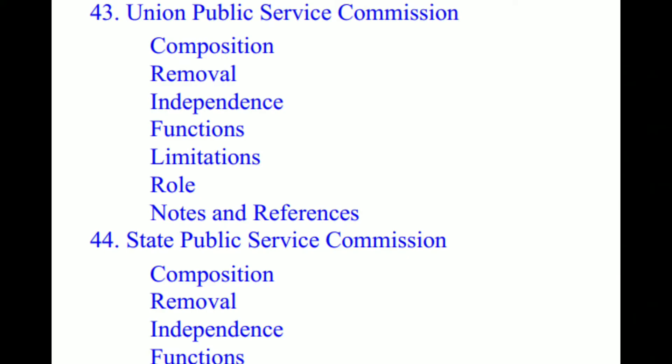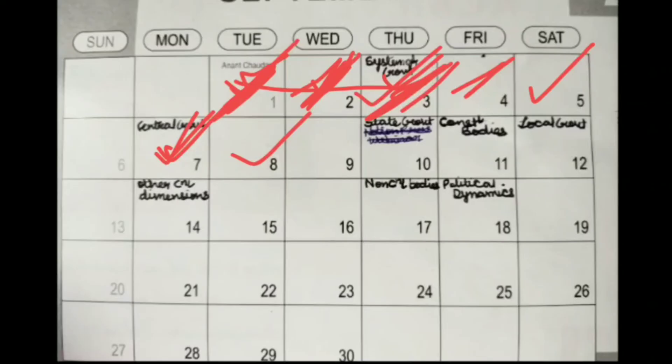Along with Governor, you jump to UPSC and SPSC. Whenever you study a central body and a state body, compare them side by side — that way you complete two chapters at once. UPSC and SPSC are about four pages each, so eight pages done. On day eight you complete three chapters.